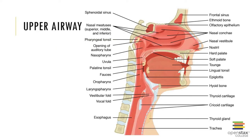Looking at the upper respiratory tract in detail: the nose is the primary passageway for air entering the respiratory system when you are resting and breathing quietly. Breathing is an autonomic process — we breathe without constantly thinking about it.